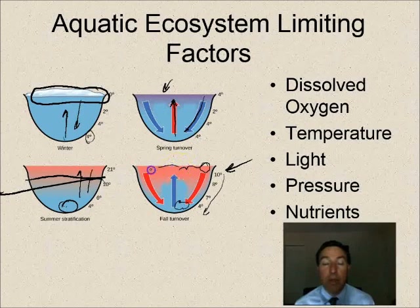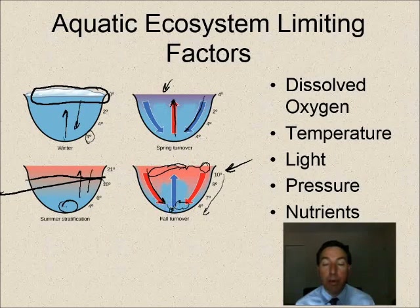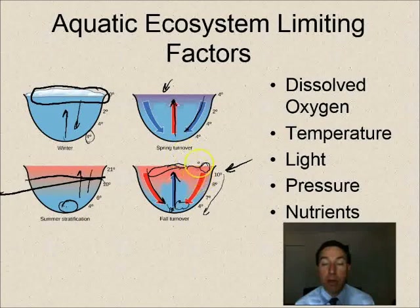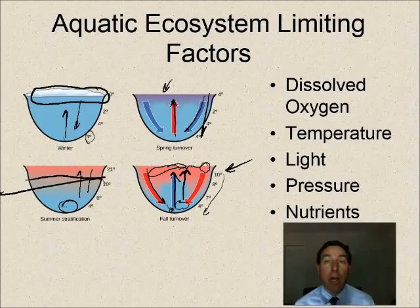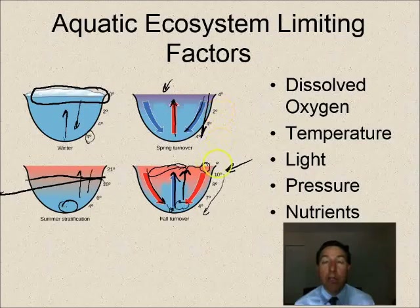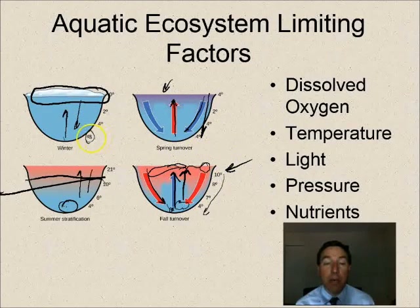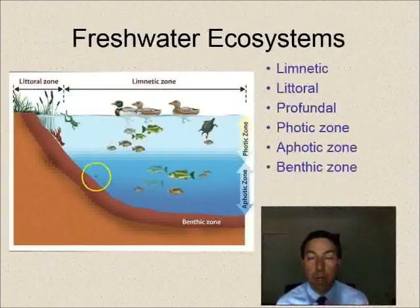Fall turnover is one of the most important events — the surface water cools and sinks, bringing warmer temperatures down and colder water up from the bottom. When this turnover happens, dissolved oxygen is brought from the surface down to the depths, and nutrients are brought from the depths up to the surface where algae and plant life can use them. These turnover times are special because they produce algae blooms and higher primary productivity.